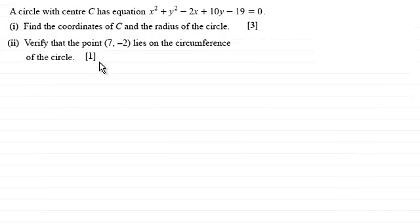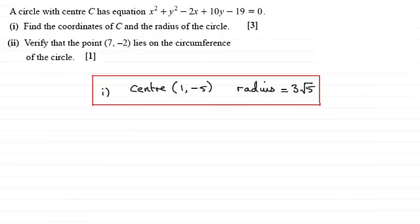So if you'd like to have a go at this and haven't done so already, I'll just give you a moment to pause the video. OK, welcome back then if you had a go. Now the answer to part 1 is that the centre of the circle has coordinates 1, minus 5. And the radius is equal to 3 root 5. So if you didn't get these and just want to see how we get this answer, then I'll take you through it.